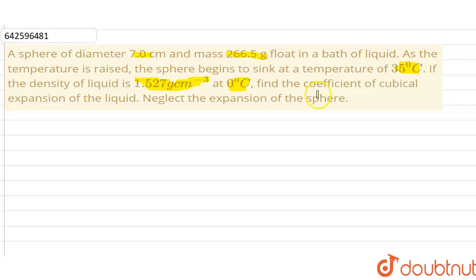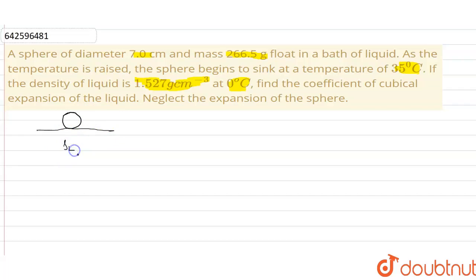We have a condition where this is the layer of liquid and a sphere is floating in it. From this condition, we can say the density of the liquid at 0 degrees Celsius is greater than the density of the sphere at 0 degrees Celsius — that's why it is floating. Now, when the temperature is raised to 35 degrees Celsius, the sphere begins to sink.